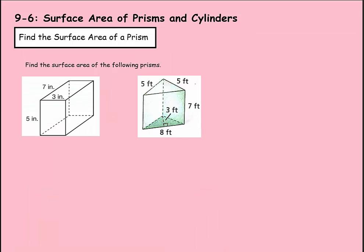Here we need to find the surface area of the following prisms using our formula: 2 times the base plus the perimeter times the height. Let's find the area of the base first. Making the top face the base, the area is length times width, so that would be 21. So B equals 21.